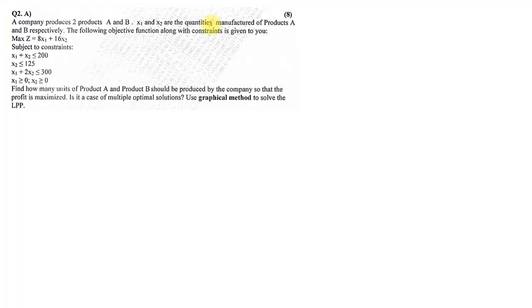The very first question was question number 2A. A company produces two products A and B. X1 and X2 are the quantities manufactured of product A and B, and the following objective function is given: max Z equals 8x1 plus 16x2. Then they give you subject to constraints and we have to solve them graphically.